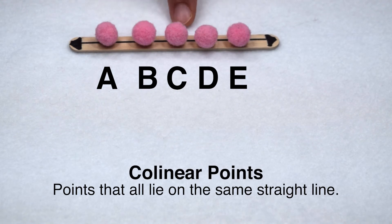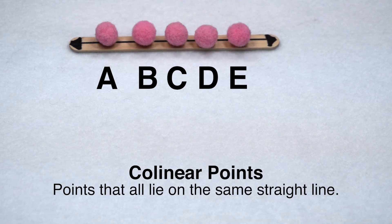So points A, B, C, D, and E are all collinear. We could name the line using any two points on there.